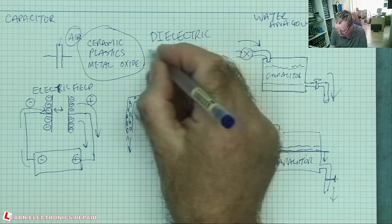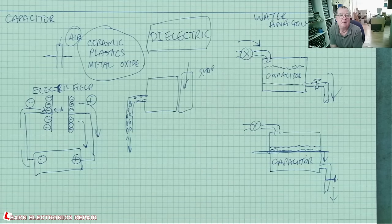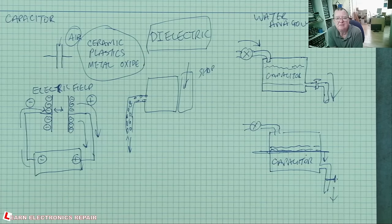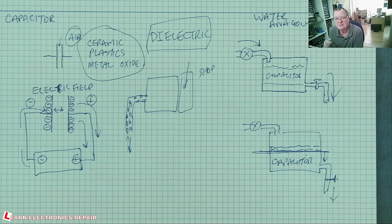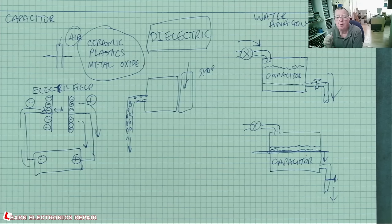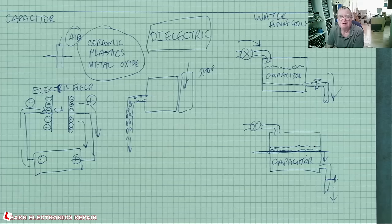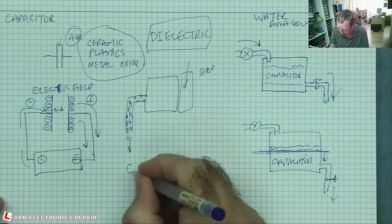But we have an insulator, that's the dielectric. No electrons can flow through the dielectric. It's an insulator. Nothing can flow through the dielectric. So why then, if you know any little bit about electronics, you'll see that capacitors block DC current.